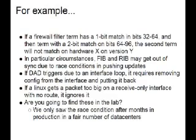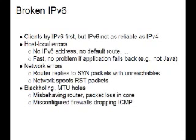When you find a bug, don't stop testing and don't wait for the vendor's maintenance release to fix it—find the next bug because it's there. Put acceptable workarounds into production because the hardest bugs to find can only be found at production scale. Choice examples of bugs: a firewall filter term with a one-bit match in bits 32-64 and a two-bit match in bits 64-96 may just not work on a particular platform. FIB and RIB can get out of sync in particular race conditions. Duplicate-next-hop detection issues may require deactivating and reactivating interface configuration to fix.